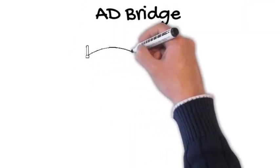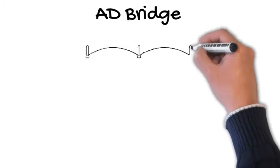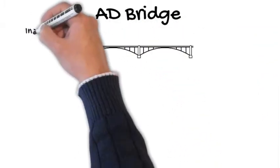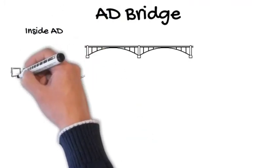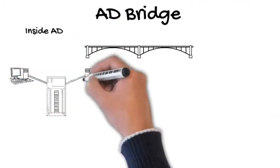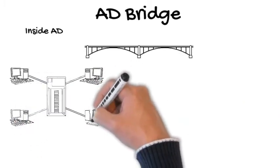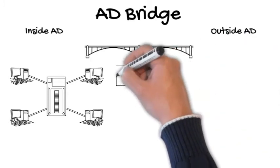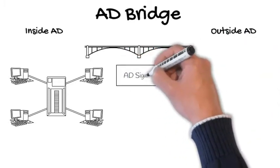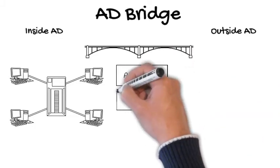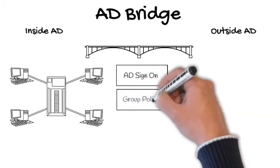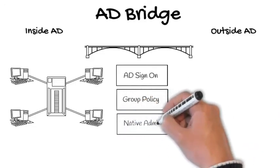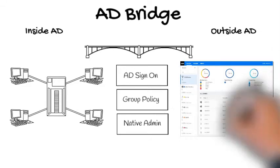I'd like to introduce AD Bridging by Micro Focus. This allows us to bridge the services that AD provides internally — managing those Active Directory resources — while also providing those resources to devices and services outside of AD. This allows endpoints to utilize AD single sign-on, utilize native group policy settings to configure devices, and even uses native administrative UIs so administrators aren't learning new user interfaces and tools.